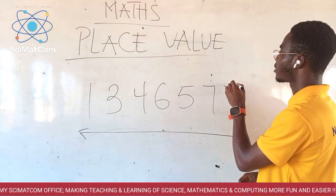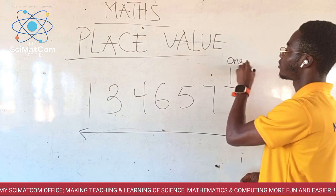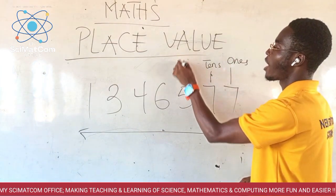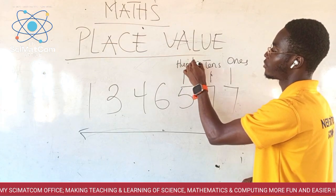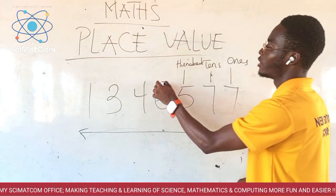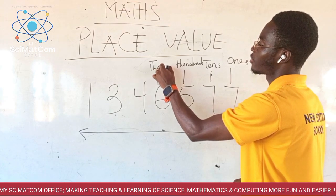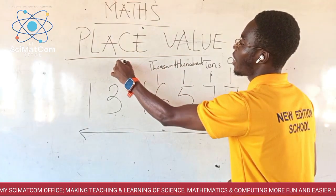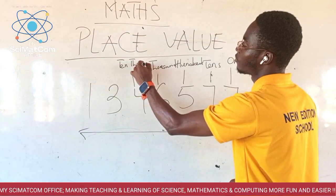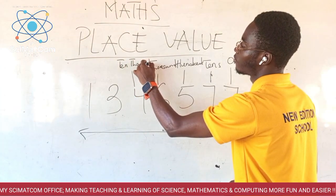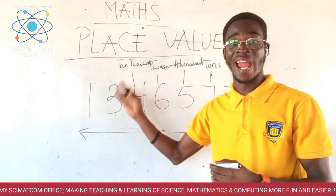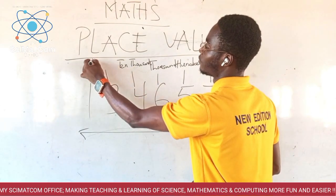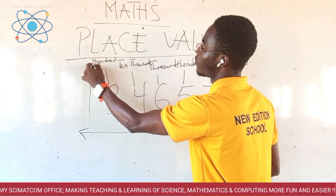So the first one becomes ones. This one, tens. This one becomes our hundreds. This becomes our thousands. Where are tens of thousands? We see tens of thousands. We have our hundreds of thousands.